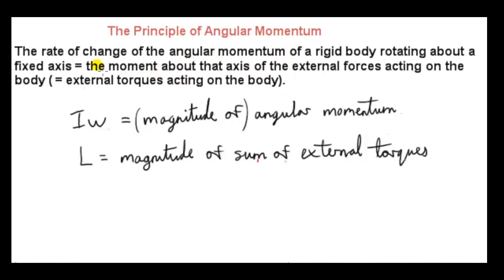I'll start off by just stating this principle and then go through it in detail. The rate of change of the angular momentum of a rigid body rotating about a fixed axis equals the moment about that axis of the external forces acting on the body. The right-hand side of this equation could be rewritten as the sum of external torques acting on the body. We saw in the section on statics that the moment of a force about an axis is known as the torque, and I'll keep using this terminology from now on.